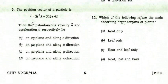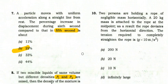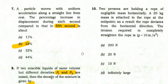The position vector of a particle is r = 2t² x̂ + 3·2ŷ + 4ẑ. The instantaneous velocity v and acceleration a respectively lie — the right option is: on the xy-plane and along the x-direction.